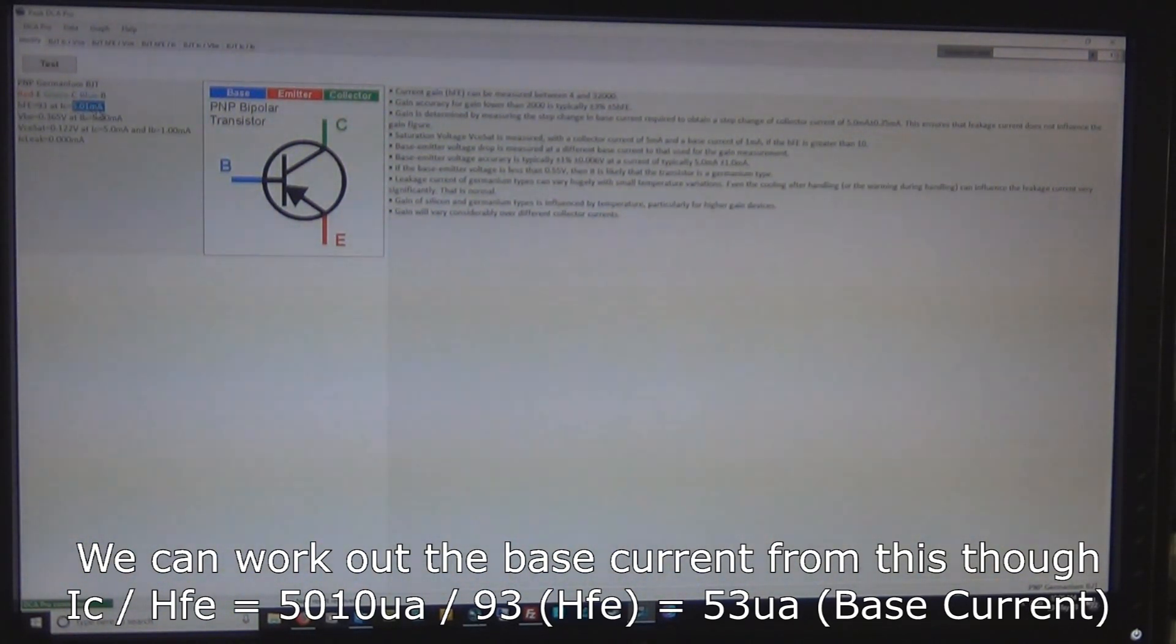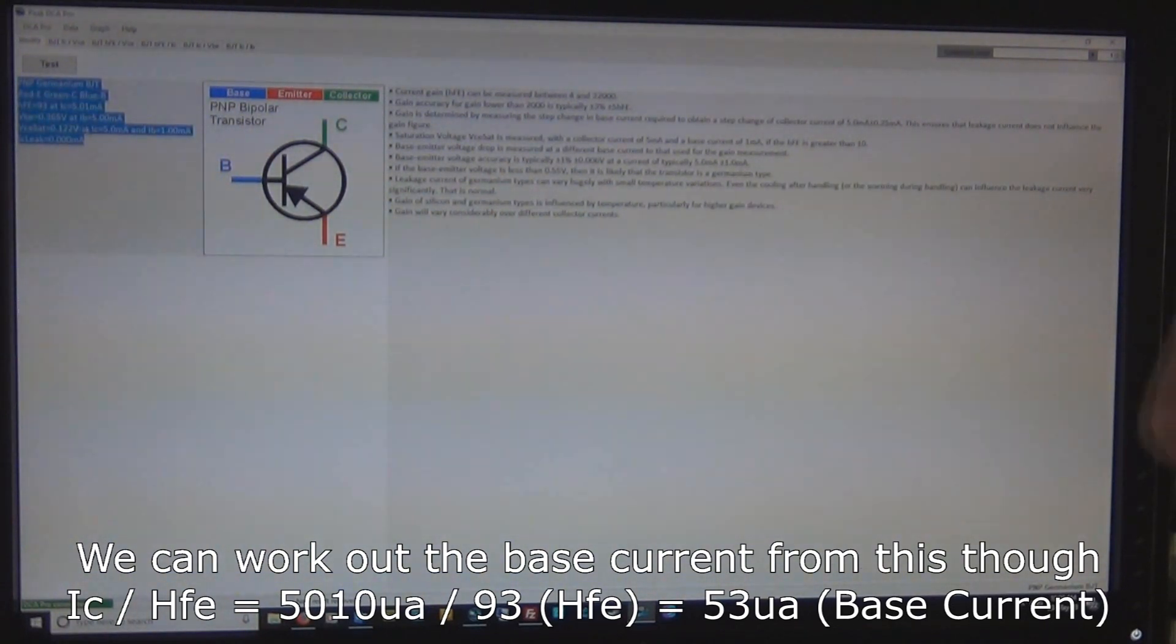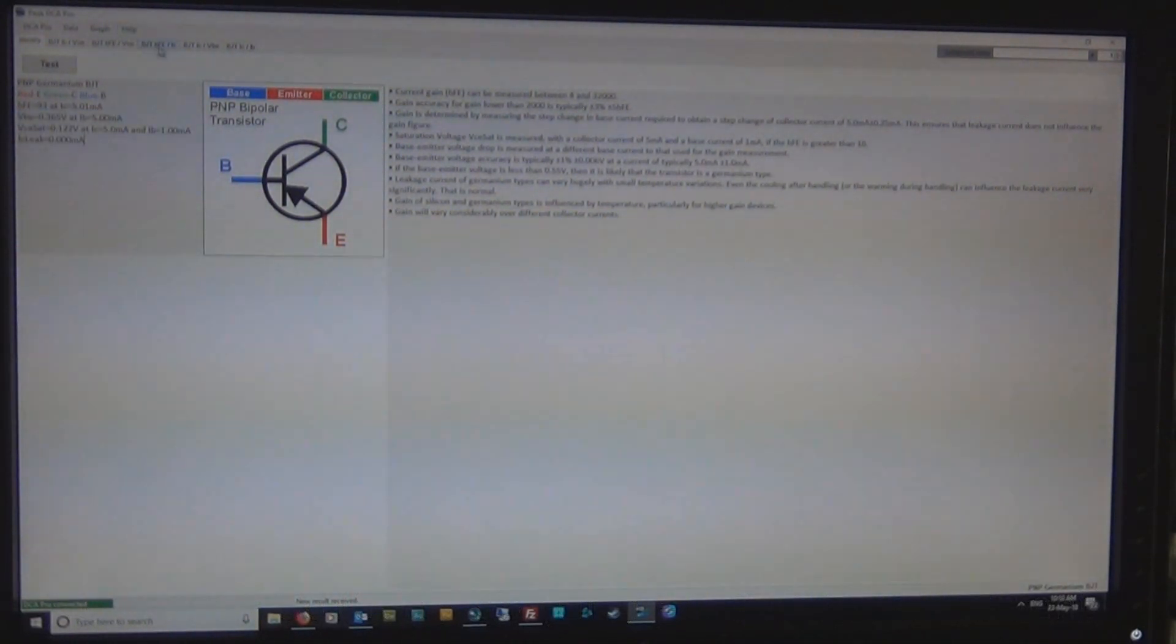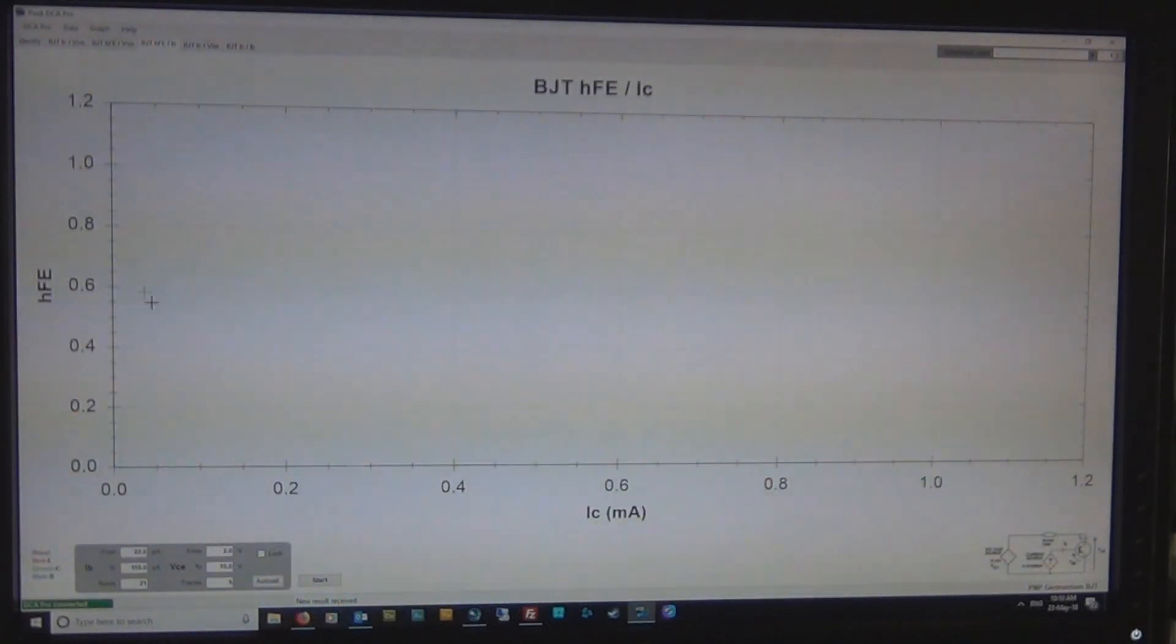So it just pumps the base until it gets 5mA on the collector. I think it's a safety mechanism so you don't end up damaging the DCA. I think when I spoke to what's his name, Jez from Peak, that's what he said, the reason why. So let's have a look at the curve trace that actually traces this.